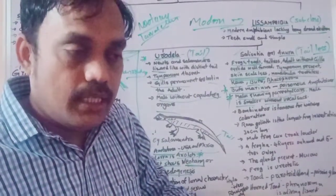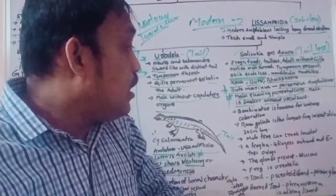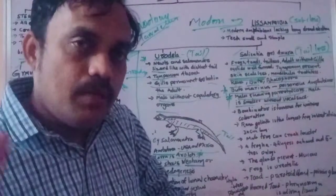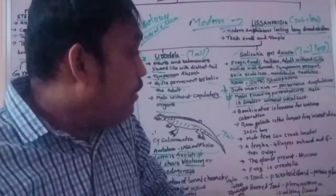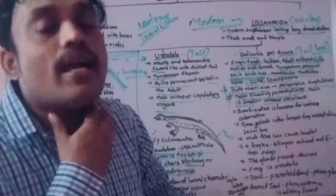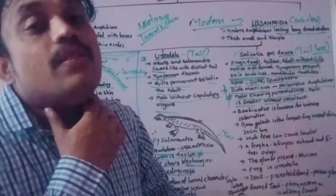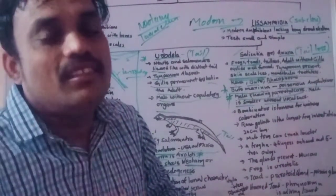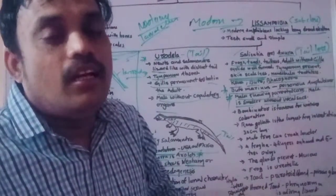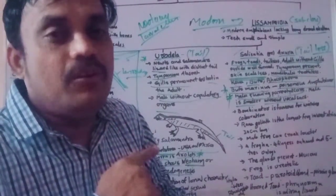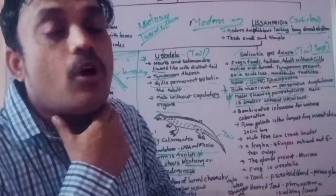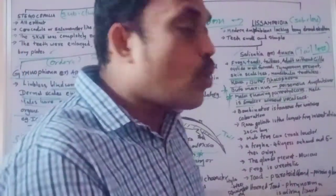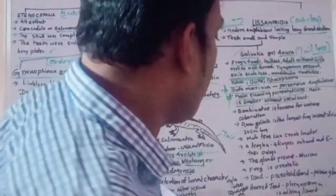In toads, the parotoid gland is a sebaceous gland that is modified into a poisonous gland, like snakes. The horned toad is called Phrynosoma — it is actually a reptile, a living lizard, not an amphibian. Hyla is the tree frog, living in trees. Rhacophorus is the flying frog, jumping from one tree to another.